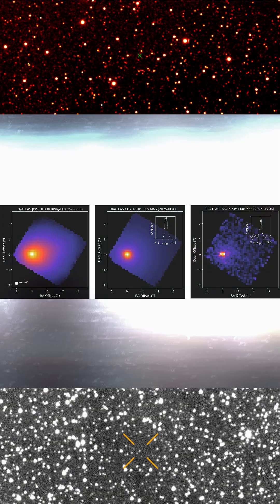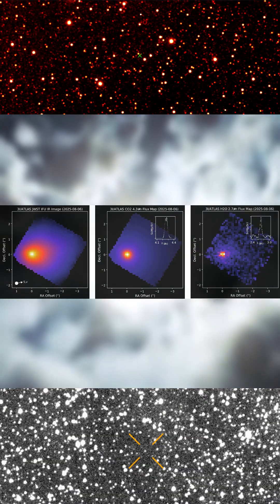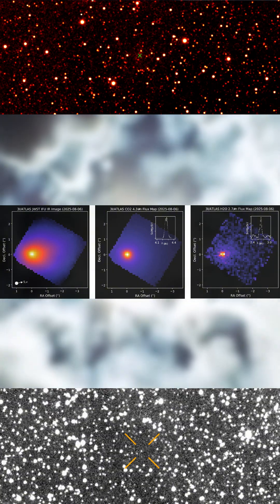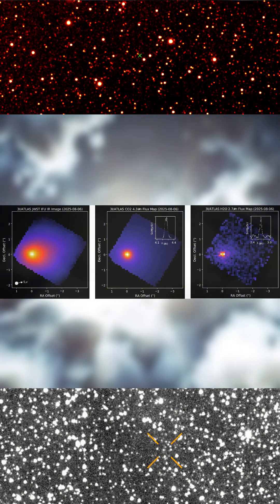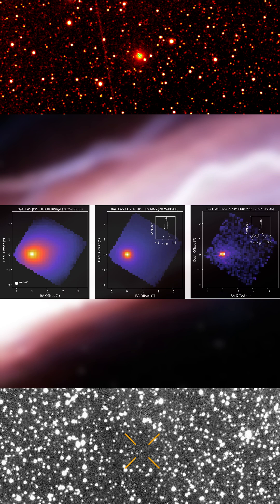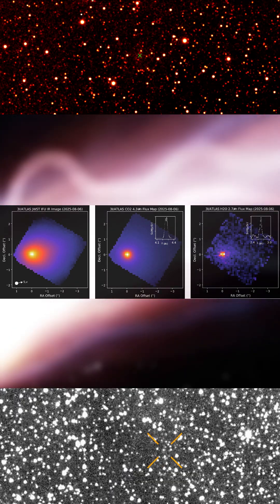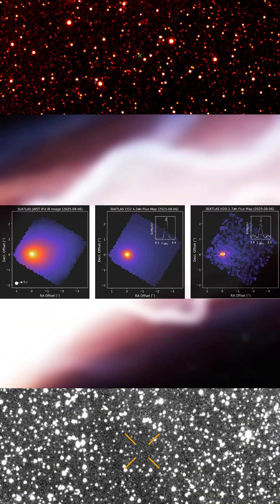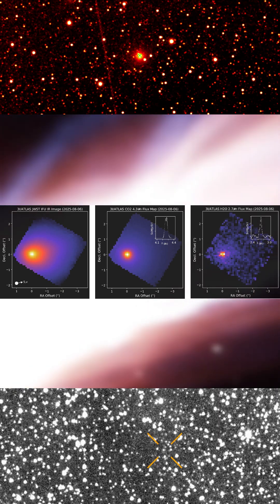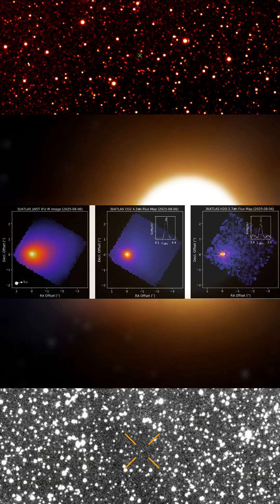Webb detected a coma dominated by carbon dioxide. At 3.3 astronomical units, comets in our solar system are normally water driven. C/2023 A3 Atlas is producing eight times more carbon dioxide than water, a ratio measured at six standard deviations above the trend observed in other comets.